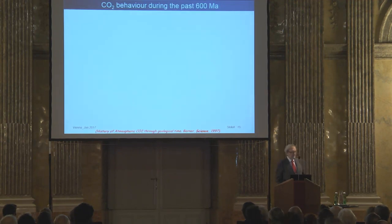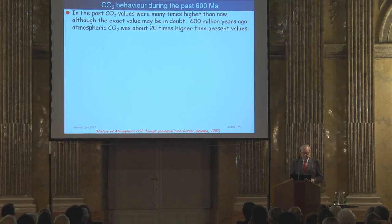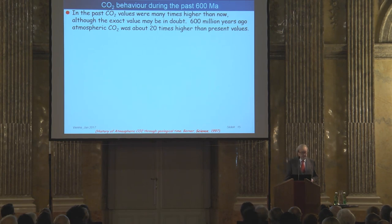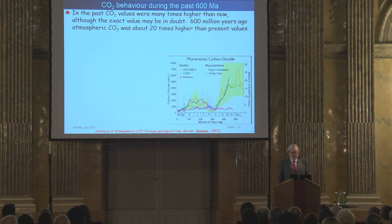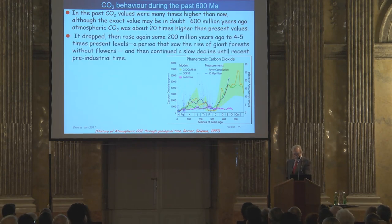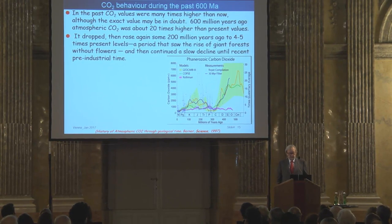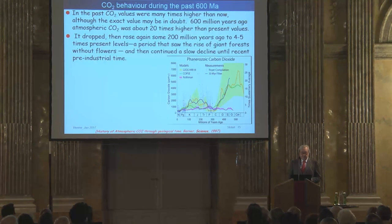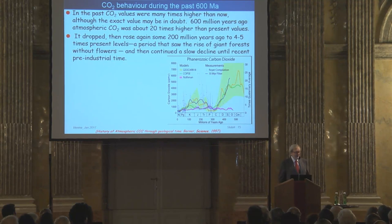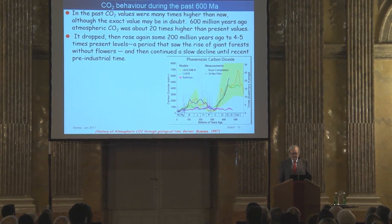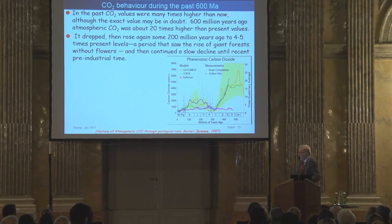Now let me address the existence of carbon dioxide. The CO2 during the last 600 million years: 600 million years ago, atmospheric CO2 was about 20 times larger than present values. It dropped and then rose again — 402 million years ago to four to five times the present level — a period which saw the rise of giant forests without flowers. Flowers only appeared very late in Earth's history. Then there was a continued slow decline until recent pre-industrial times. You can see a graph showing the time and effect of CO2, with today at one end and 600 million years ago at the other, showing various models and measurements.